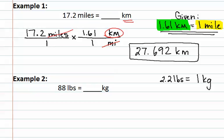I start by writing what I already have, or the 88 pounds. Remember, if there is not a second unit given, you put it over one. We are now going to multiply this by a conversion factor.